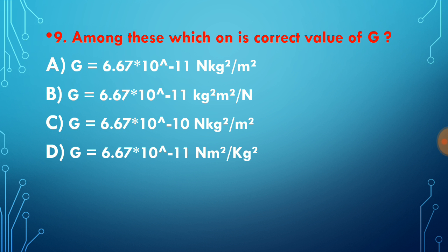Among these, which one is correct value of G? Correct value of G is 6.67 × 10^-11 newton meter square per kg square. In other options, the unit is not correct, and in option C the value is not correct. So you need to take care of unit as well.